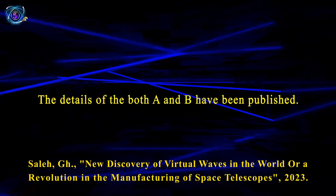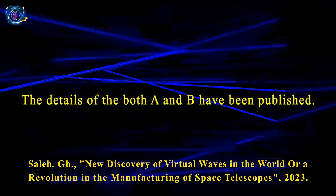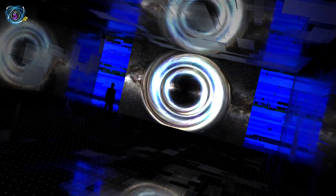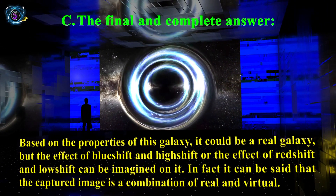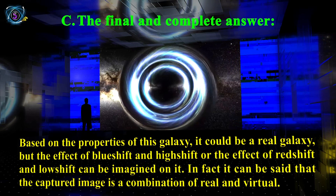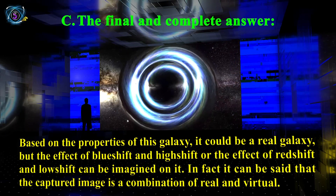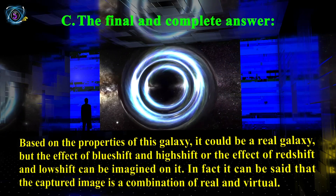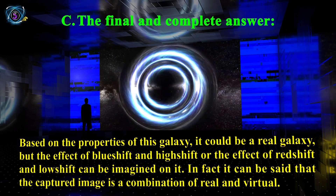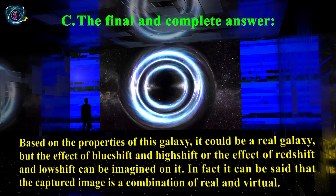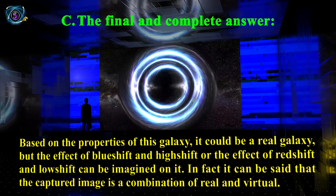The details of cases A and B have been published. C. The Final and Complete Answer: Based on the properties of this galaxy, it could be a real galaxy, but the effect of blue shift and high shift, or the effect of red shift and low shift, can be imagined on it. In fact, the captured image can be said to be a combination of real and virtual.